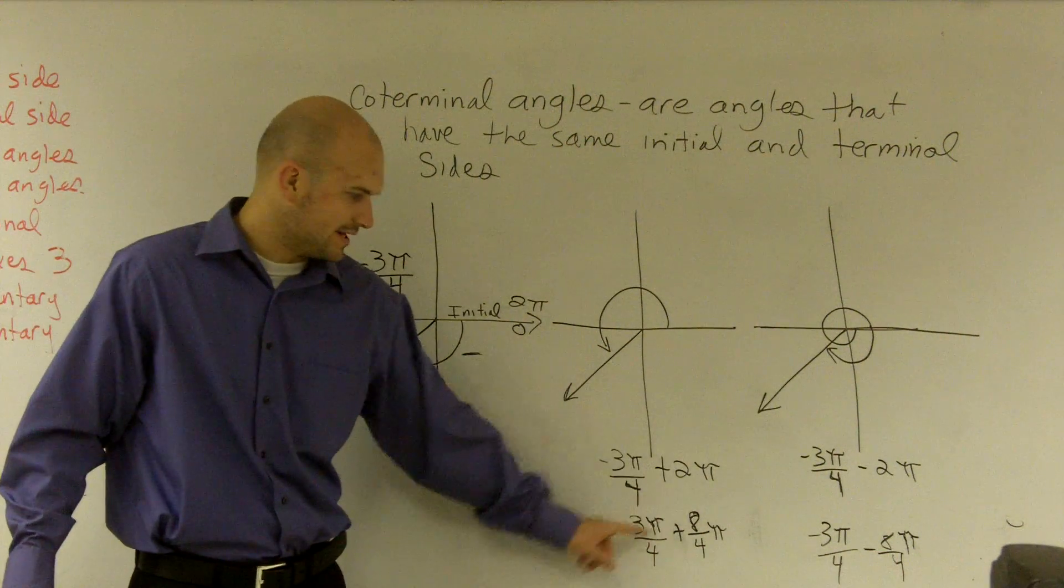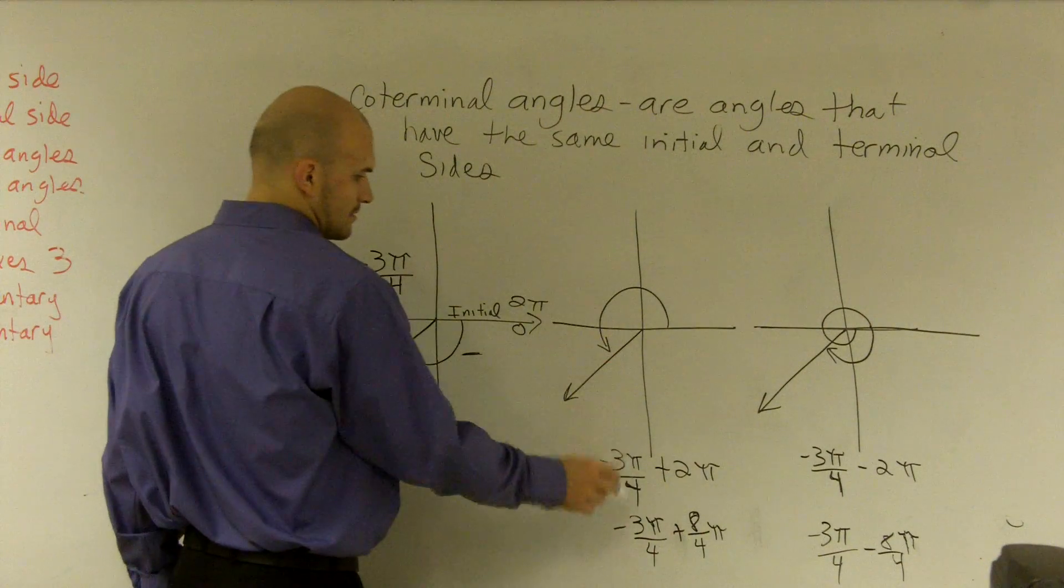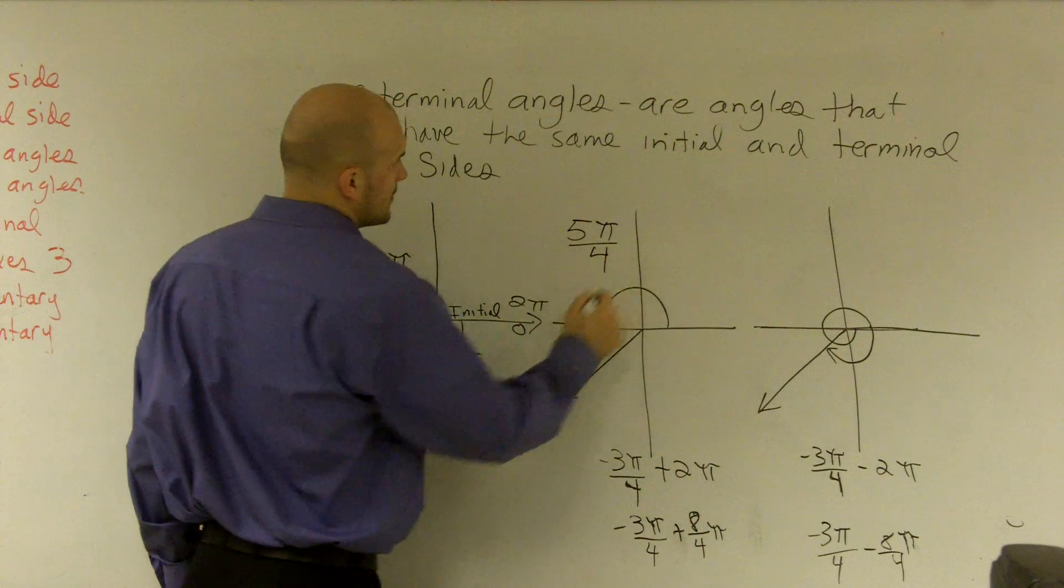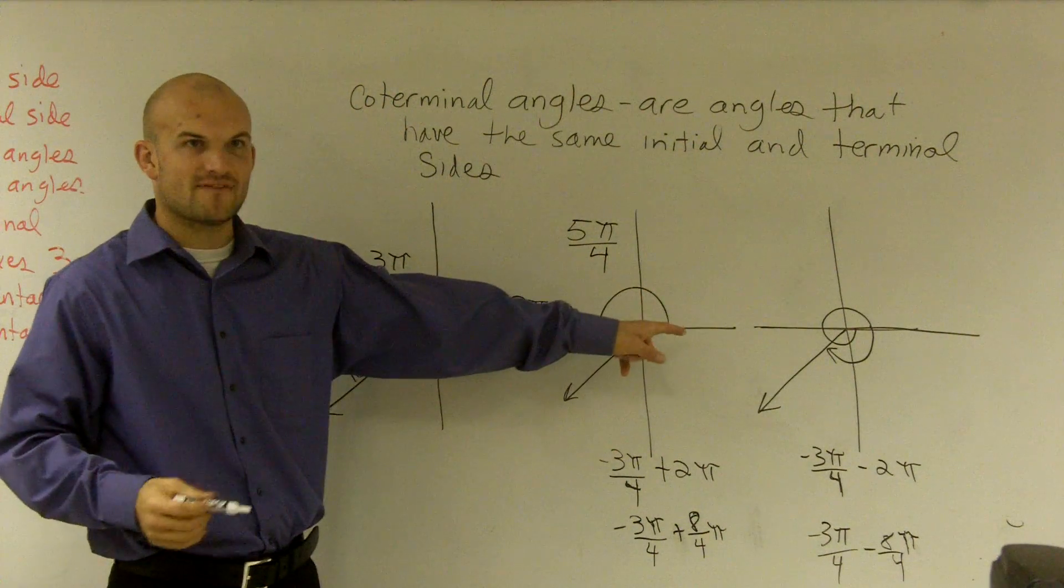Well, what's negative 3 plus 8? Plus 8, right? That's 5. 5π over 4. And does that look about 5π over 4?